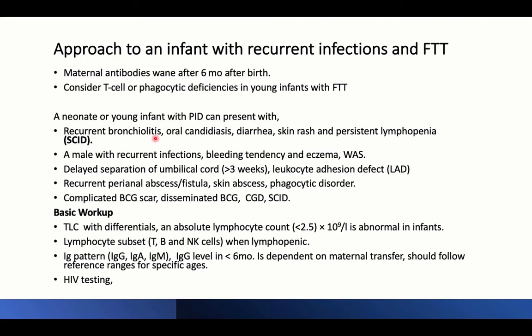Delayed separation of the umbilical cord suggests leukocyte adhesion deficiency. Recurrent perianal abscess, fistula, or skin abscess suggests a phagocyte disorder like neutropenia or abnormal neutrophil function. Complicated or disseminated BCG is very important — suspect chronic granulomatous disease or severe combined immune deficiency.